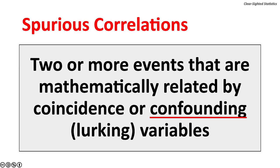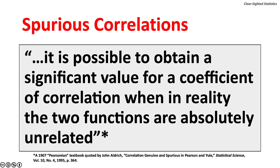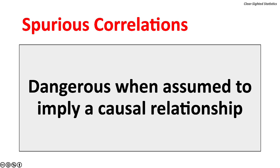Spurious correlations are two or more events that are mathematically related by coincidence or confounding, lurking variables. It is possible to obtain a significant value for a coefficient of correlation when in reality the two variables are absolutely unrelated. Spurious correlations can be dangerous when they are assumed to imply a causal relationship.